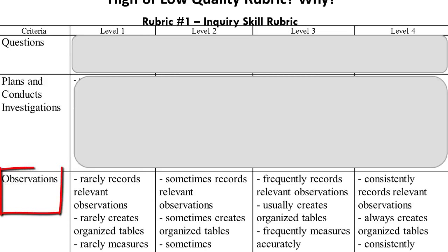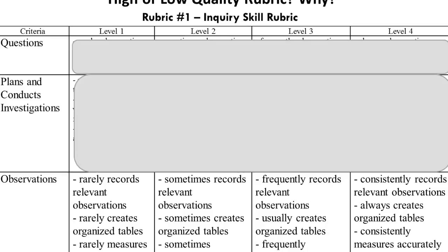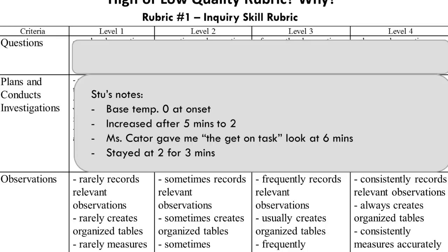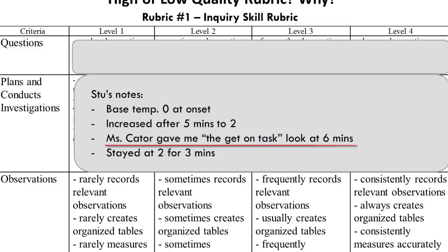The final row has to do with observations — again, not very clear. What about the observations? Quality? From the looks of the descriptors in the continuum, it appears it is more about organizing the observations. What are some problems besides lack of clarity about what exactly 'observations' refers to? Pause and take a look. Let's see what Stew came up with. His recording was accurate, but not on a table. Were his observations relevant? Maybe. One might argue that Stew did note that Ms. Cater was giving him a reminder of some sort, and that is indeed relevant. He did not create a table. Does he do this consistently? Is his work accurate? It is, but we don't know if it is consistent. The wording is not clear because we are not clear on what we are measuring, and there are too many things combined within one cell.